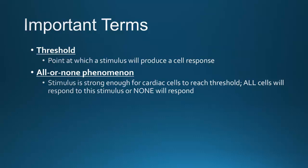The all-or-none phenomenon means that when the stimulus is strong enough for cardiac cells to reach the threshold, all cells will respond to the stimulus or none will respond. When the stimulus is strong enough, it starts to produce electrical conduction, and all cells will respond and contract. This has to happen for cells to contract in a syncytium. What's important about the all-or-none is that cardiac cells work together — if they're not working together, something is very wrong.